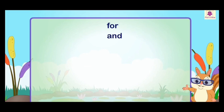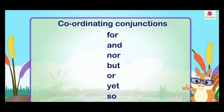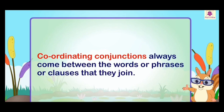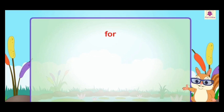First, I will tell you about For, And, Nor, But, Or, Yet, and So. These are called coordinating conjunctions. FANBOYS — F-A-N-B-O-Y-S — stands for coordinating conjunctions. These conjunctions always come between the words, phrases, or clauses that they join.